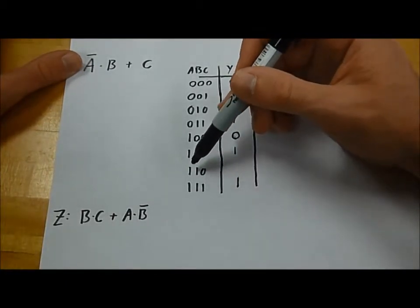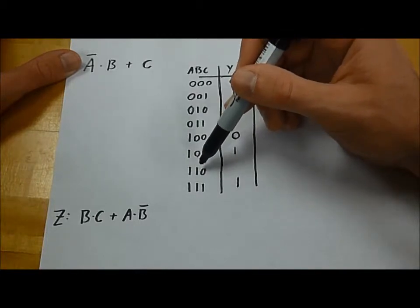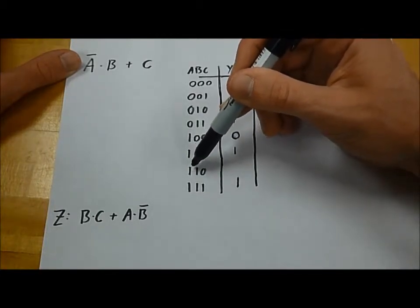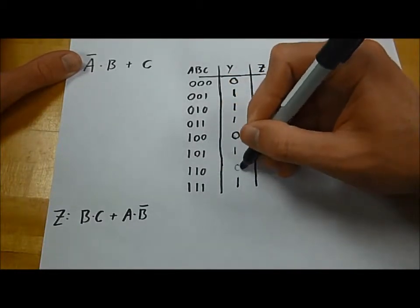Finally, we have Ā, so 0, and B, so 1, OR C, which is 0. So, this is 0 and 1, which is 0, OR 0, which is 0.